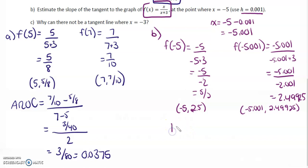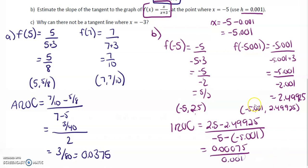So the instantaneous rate of change is going to be 2.5 minus 2.49925 over negative 5 minus negative 5.001. We get 0.00075 over 0.001, that's h. Then 0.00075 divided by 0.001 gives me 0.75.